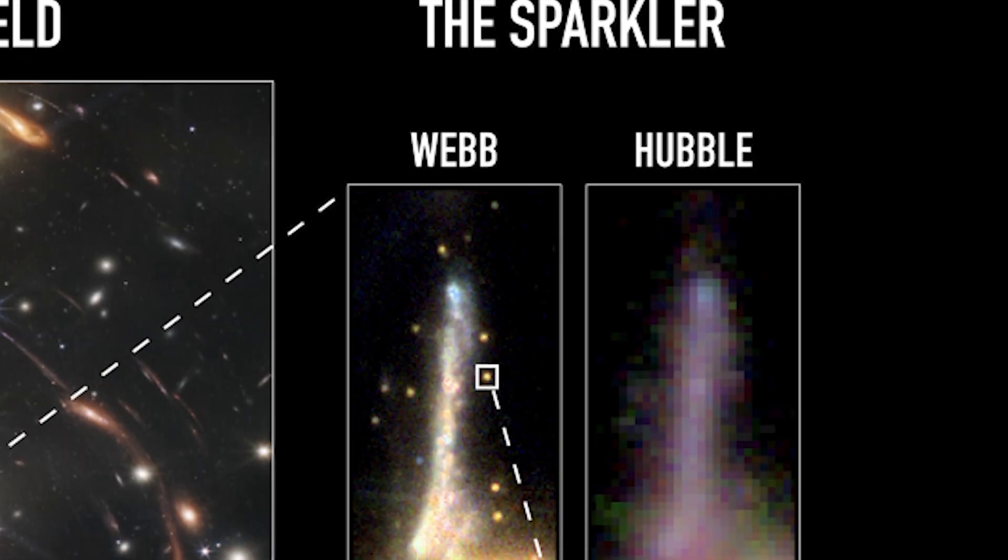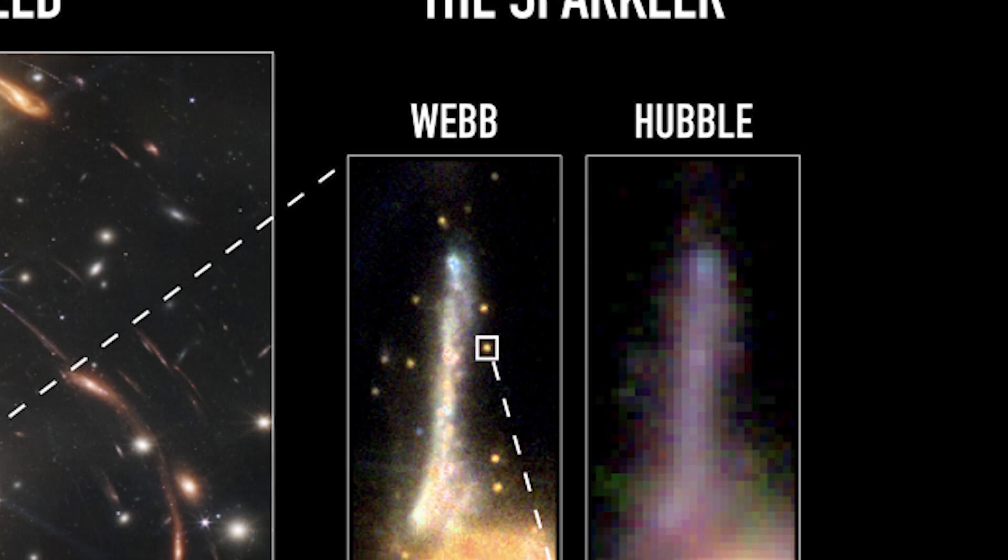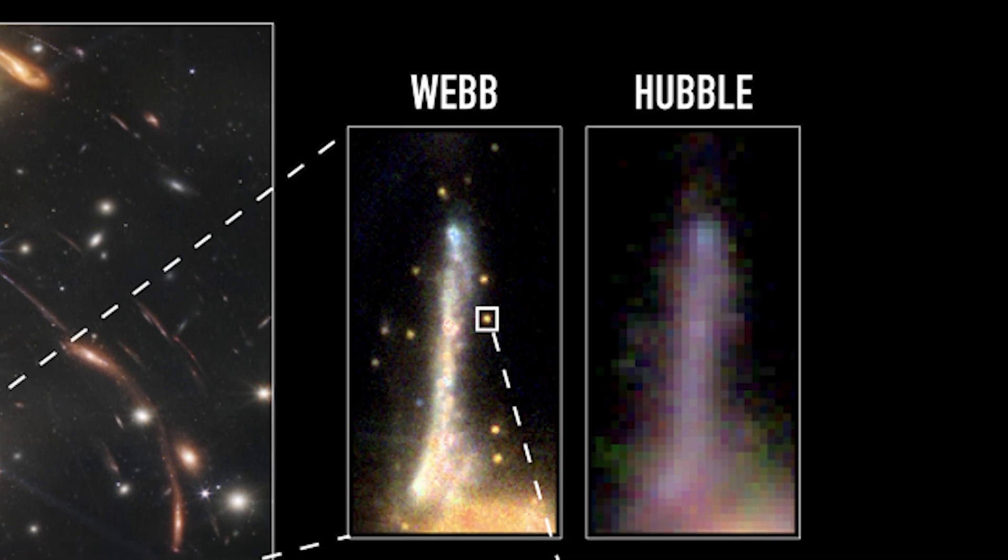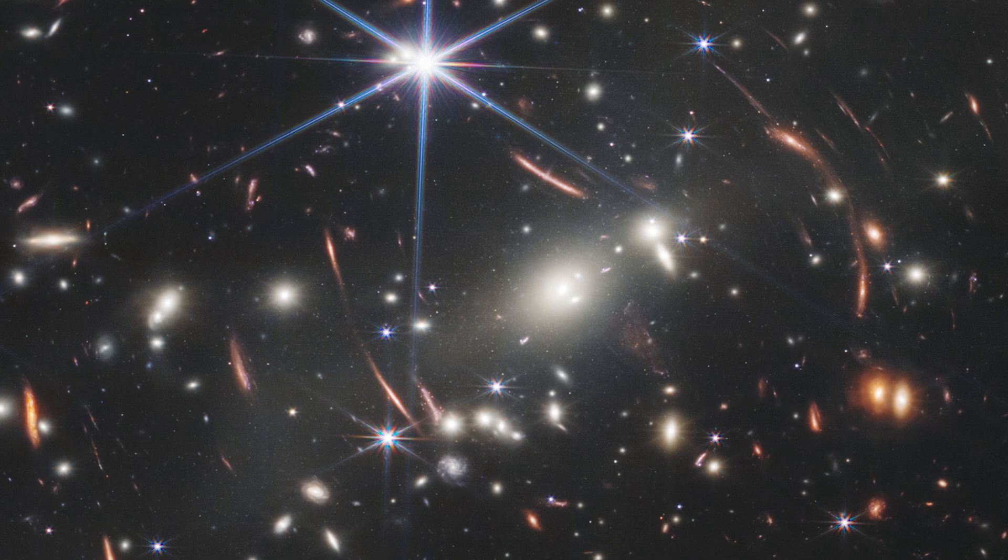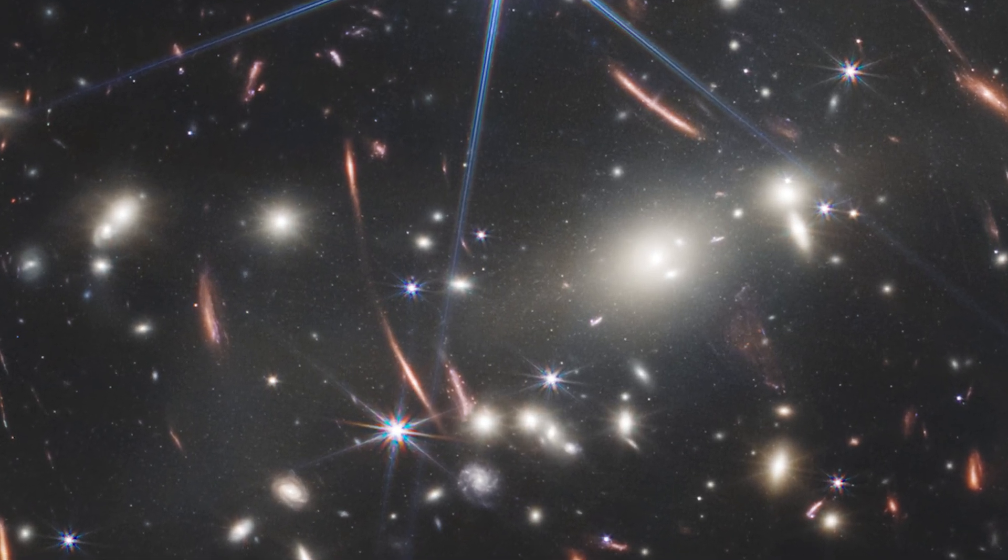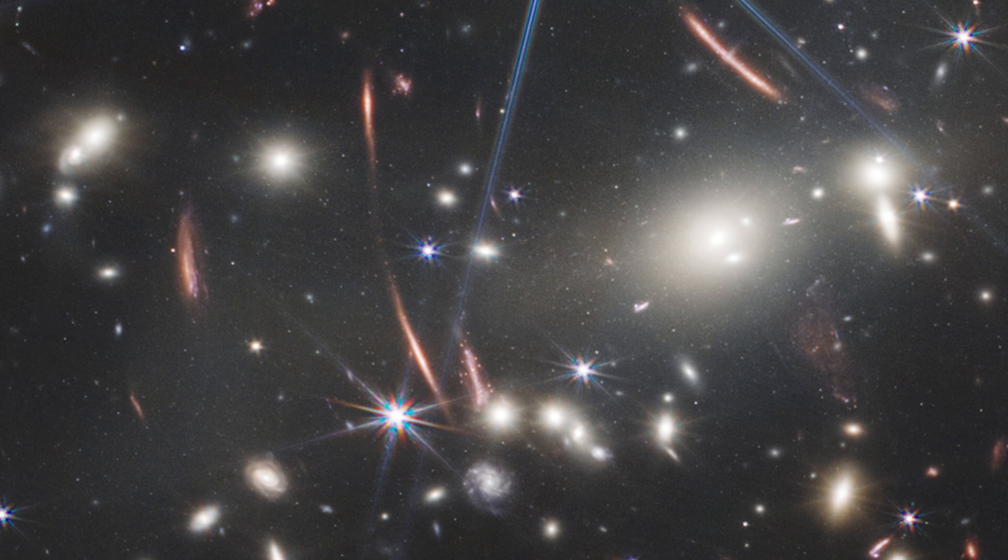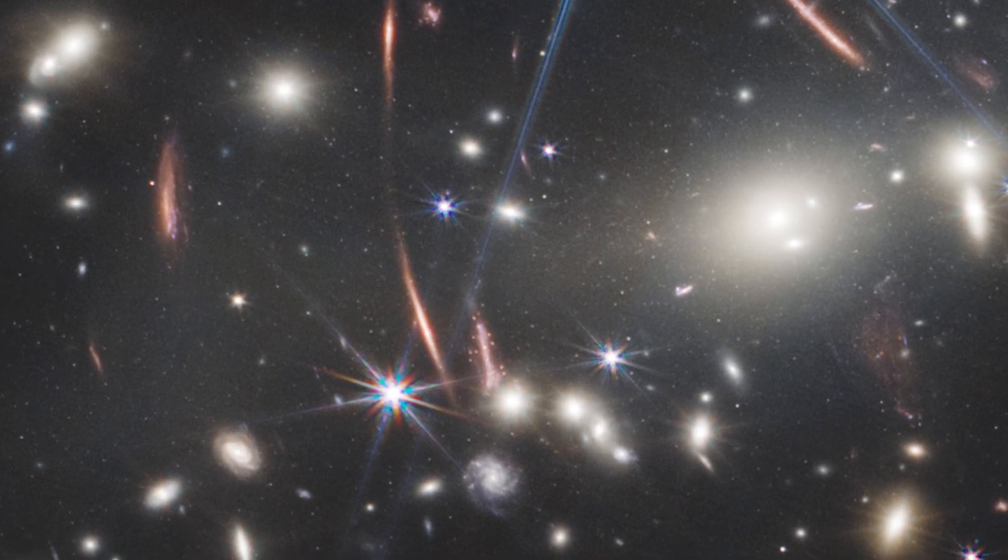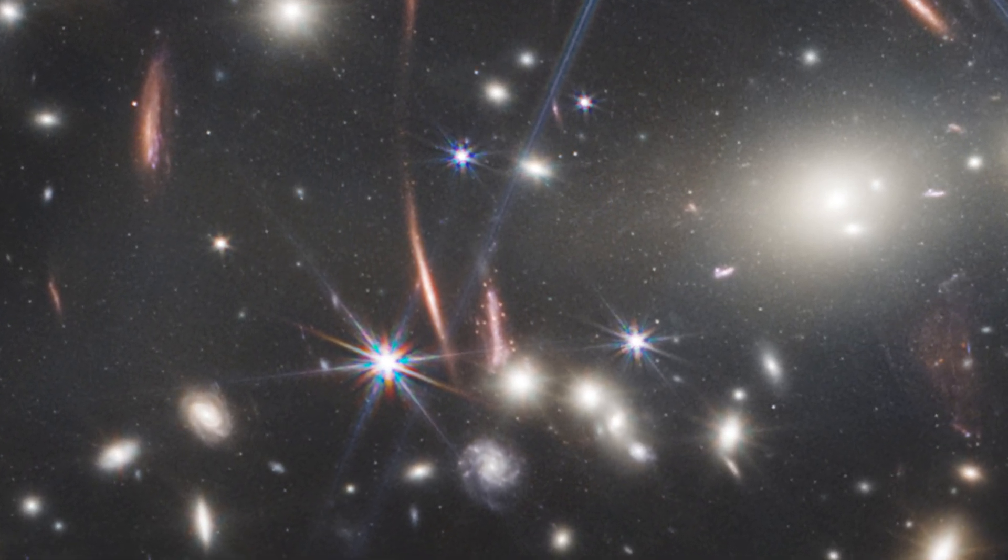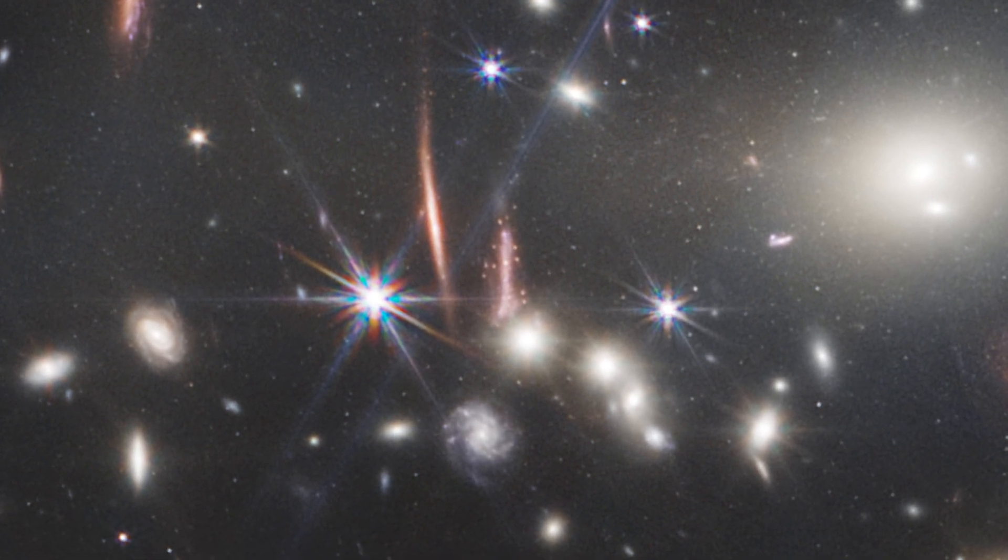Hubble Telescope studies of the sparkler galaxy had previously been unable to reveal the presence of nearby compact objects. In order to be seen, the JWST's enhanced resolution and sensitivity had to be paired with the natural magnification provided by the gravitational lensing effect, which was produced by the SMAC 0723 galaxy cluster in the foreground.